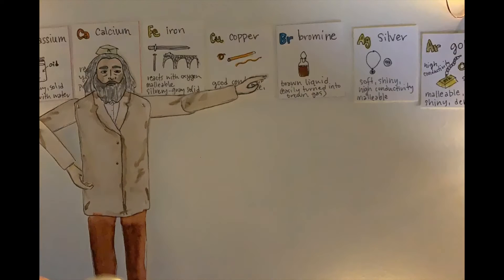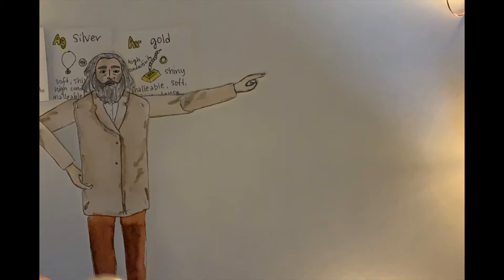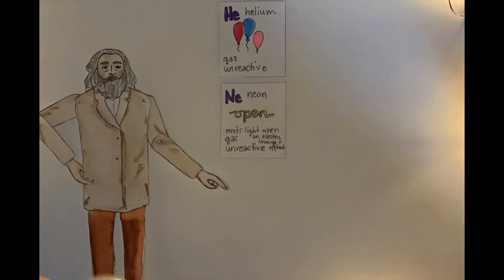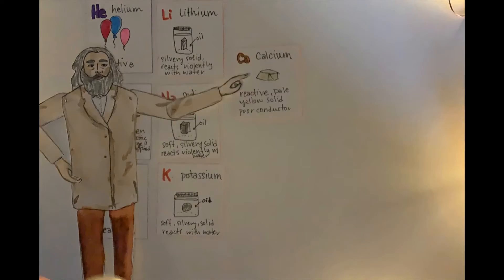He organized all known elements at the time by their atomic weights and noticed that there were patterns in the elements he arranged. He noticed that certain properties like state of matter, malleability, color, conductivity, et cetera...